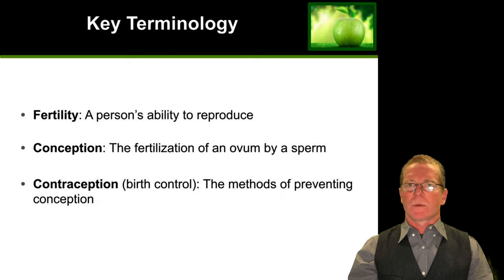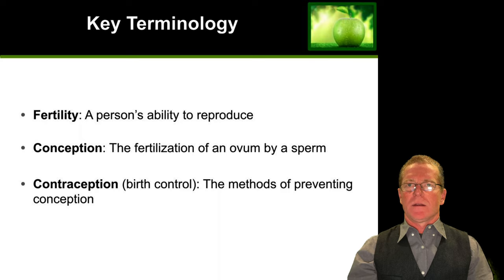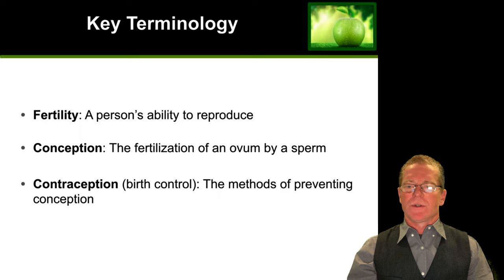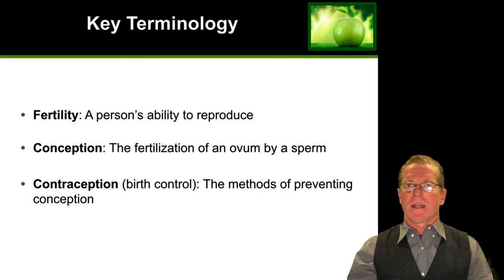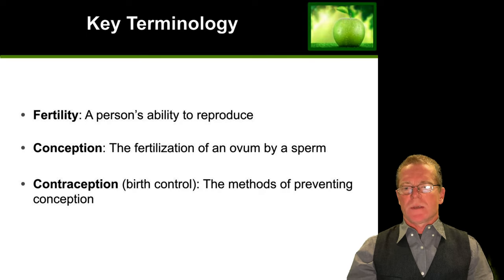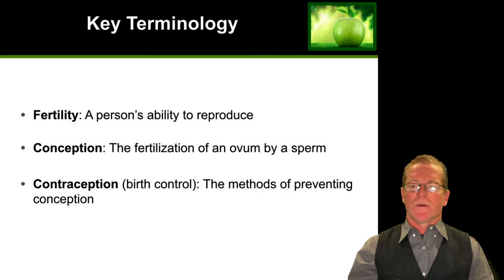Some key terminology you'll hear in this lecture: Fertility — that's the ability of a person to reproduce. Conception — that's fertilization of an egg or ovum by sperm. And contraception, or birth control — which are methods for preventing conception.